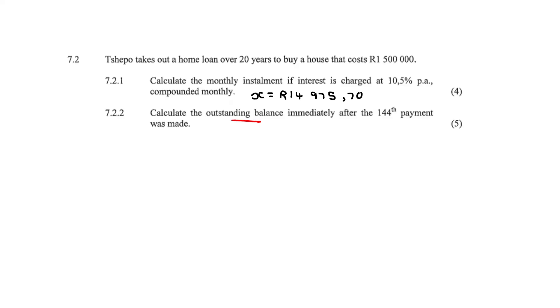But this is outstanding balance. So that was our answer for the monthly installment, the 14,975.70 cents. 7.2.2 - Calculate the outstanding balance immediately after the 144th payment was made.